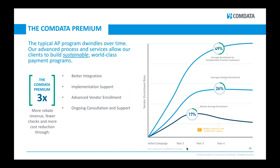To get into the sweet sauce of what CommData does better than anybody else, aside from what you've heard me reference already, is what we call the 3x factor. Anybody can implement a virtual card solution. But I feel very confident in saying we are able to enroll more spend on a virtual card program than any of our competitors. Our data proves that. This is impactful to you because it means more rebates and more hard and soft cost savings associated with the AP unit in your business.